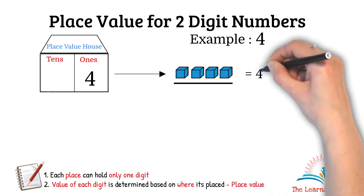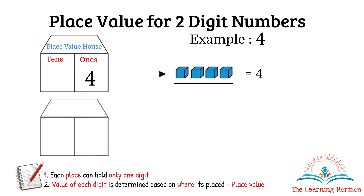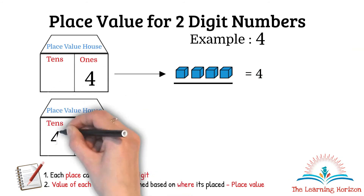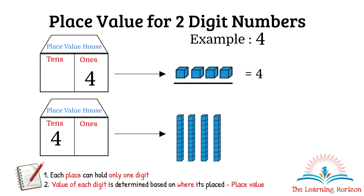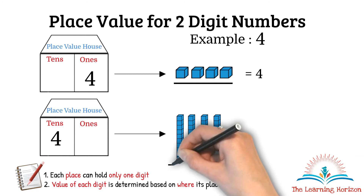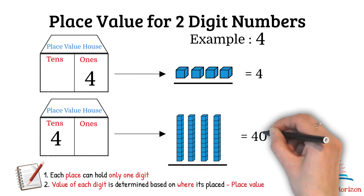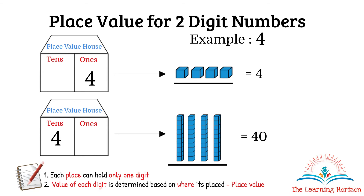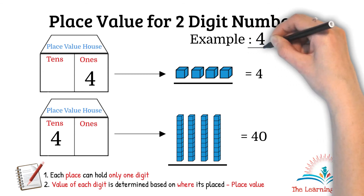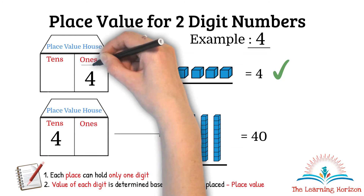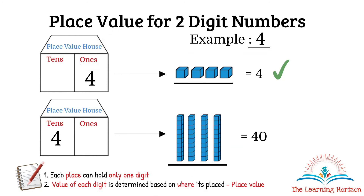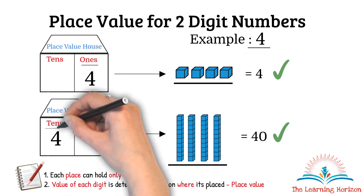Now let us place the same digit 4 in the tens place. Four in the tens place means four tens blocks, and each tens block equals 10, so four tens is equal to 40. As we observe, the same digit 4 is worth 4 when placed in the ones place, and is worth 40 when placed in the tens place.